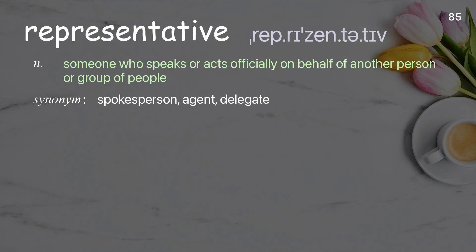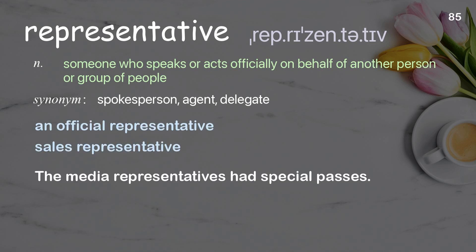Representative: someone who speaks or acts officially on behalf of another person or group of people. Examples: an official representative, sales representative. The media representatives had special passes.